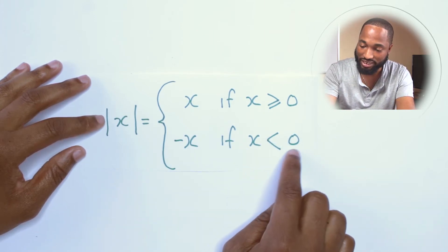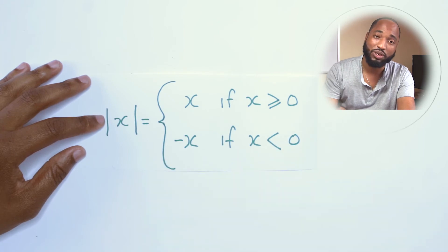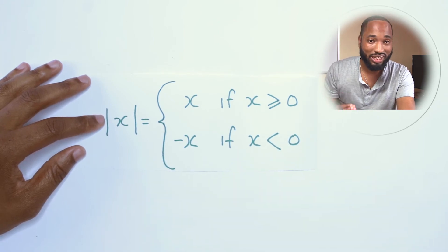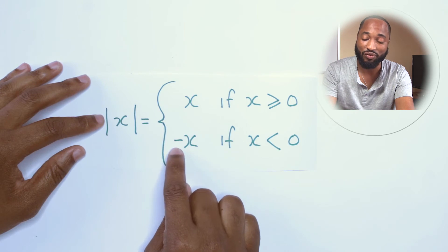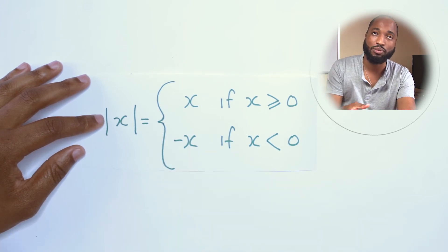However, if you have a number that is negative, if x is less than 0, you'll have to put the positive version of that number. And coincidentally, the only way to get the positive version is to put a negative in for any number.